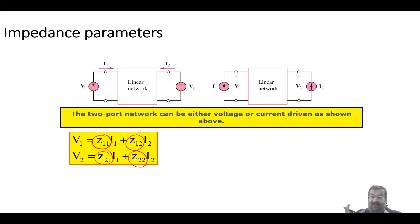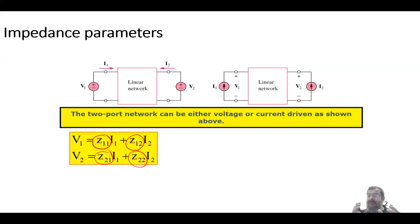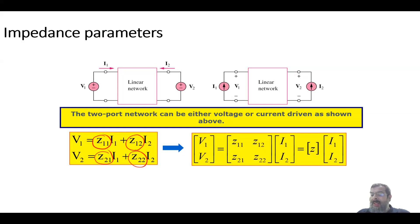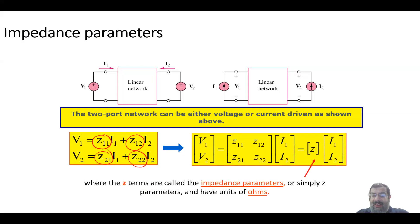This concept of representing a circuit or system as a two-port network is used in communication and signal processing. You can easily find voltages and currents — even for transmission lines — knowing the four parameters that govern the network. You can put them in matrix format, and all parameters are in ohms — the impedance.